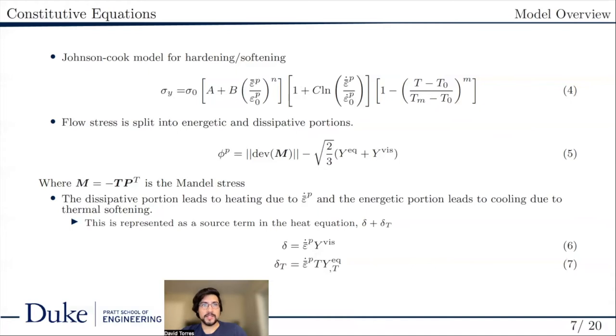Phi p represents the yield function of the model. This is recovered from minimizing the Lagrangian with respect to the plastic deformation rate and plastic strain rate.